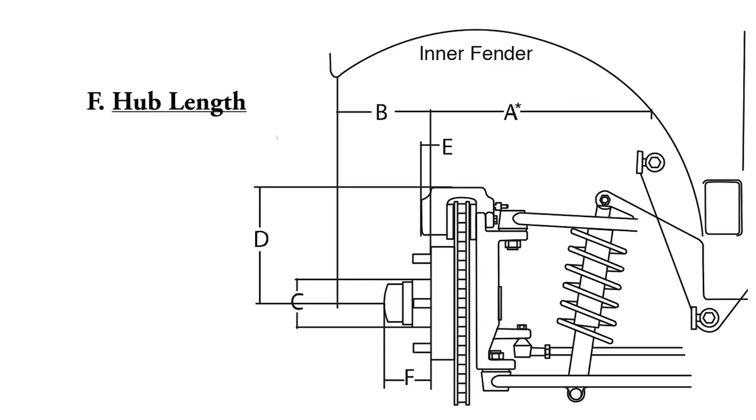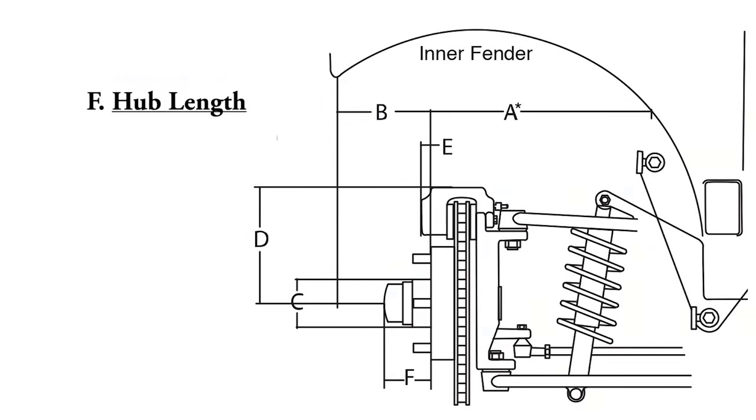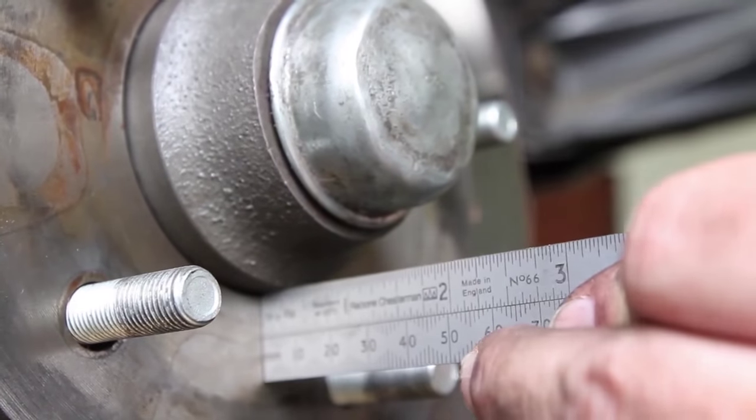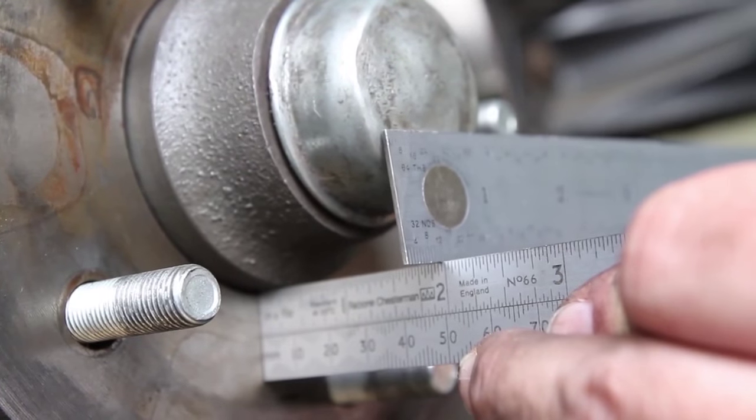The last measurement needed will be the hub length. This is measurement F on the worksheet. Measure from the wheel mounting surface to the end of the hub. This distance is very important for center cap clearance. Write down this measurement for section F.